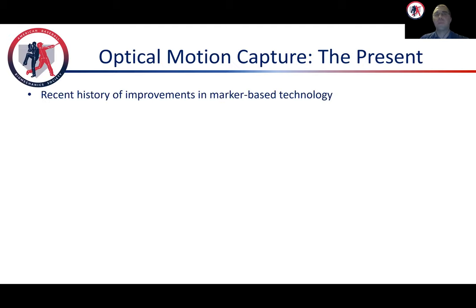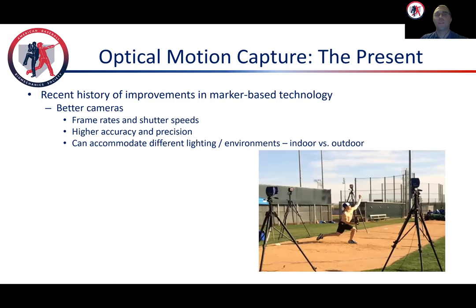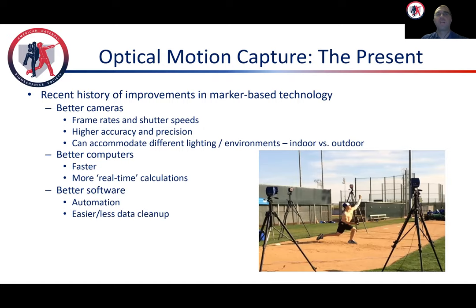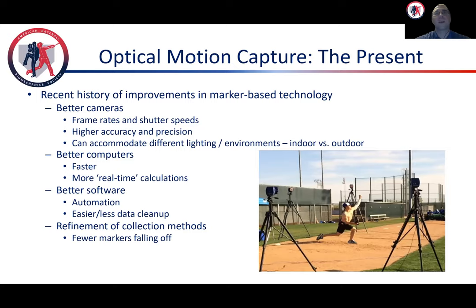Moving back to the present state of things, the overall look and workflow of optical motion capture actually hasn't changed a ton in the last 10 to 15 years, but that does not mean that there have not been improvements. We now have better cameras, and outdoor collection is no longer difficult as it once was. We have faster computers that can enable more real-time calculations. The software has been upgraded significantly as well, with much more automation and less post-processing needed. In addition, we've even optimized things like the type of tape to use to make sure that markers do not fall off during a collection. As technology has improved, high quality, lower cost marker-based camera systems have become available.